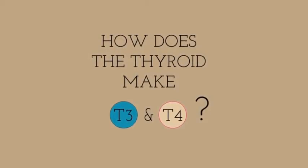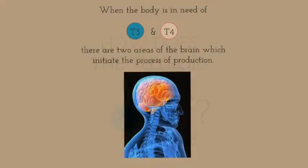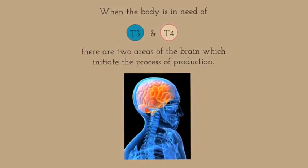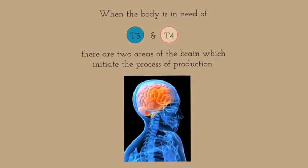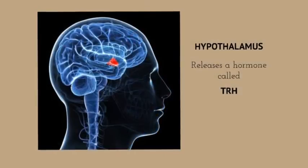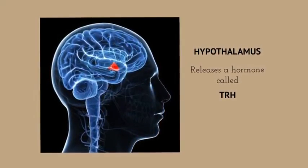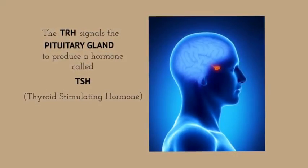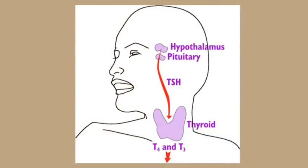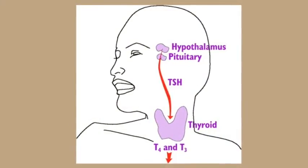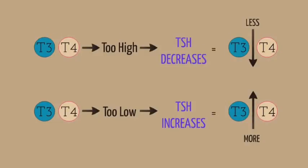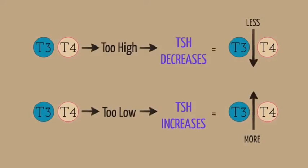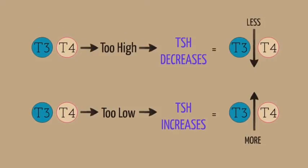How does the thyroid make T3 and T4? When the body is in need of T3 and T4, there are two areas of the brain which initiate the process. The hypothalamus releases a hormone called TRH, which signals the pituitary gland to produce a hormone called TSH. The TSH then signals the thyroid to make hormones. If thyroid hormones are too high, TSH will decrease, lowering hormone levels. If hormones are too low, TSH will increase, raising the amount of hormones.